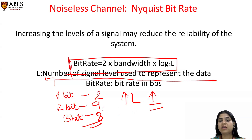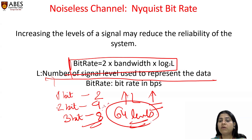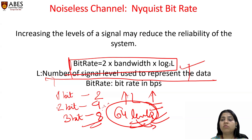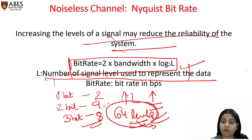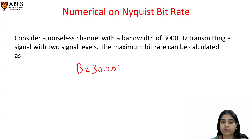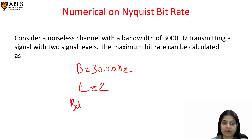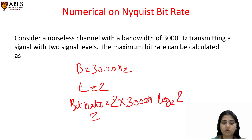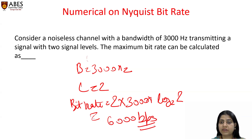Practically, if we have 64 levels for example, you are overburdening the receiver. Now we will see some numerical examples on the Nyquist bit rate formula. Consider a noiseless channel with bandwidth 3000 Hz transmitting a signal with two signal levels (L = 2). Maximum bit rate = 2 × 3000 × log₂(2) = 6000 bps — bits per second is the unit of bit rate.